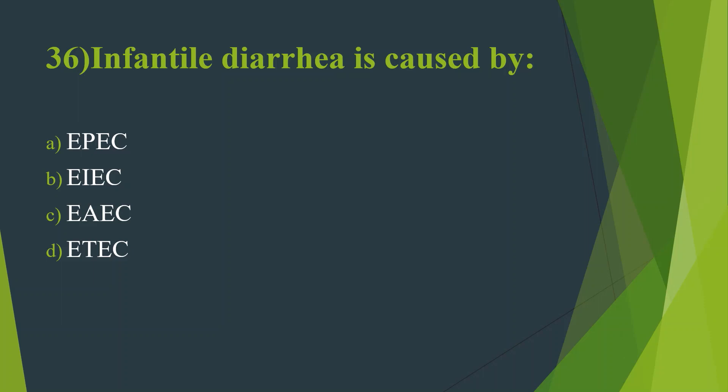Thirty-sixth question: Infantile diarrhea is caused by — Option A, EPEC (Enteropathogenic E. coli). Option B, Entero-Invasive E. coli. Option C, Entero-Aggregative E. coli. Option D, ETEC (Enterotoxogenic E. coli). Answer is Option A, Enteropathogenic E. coli.